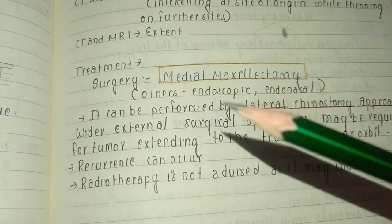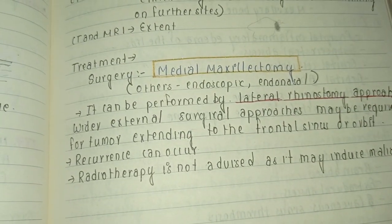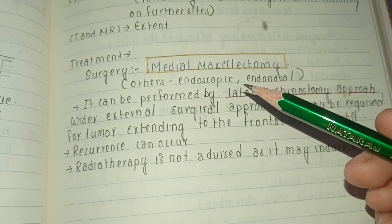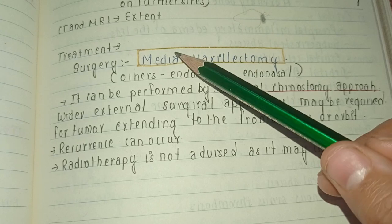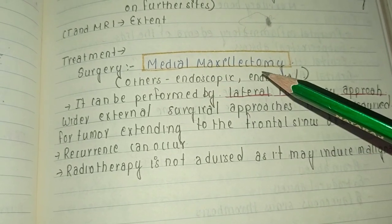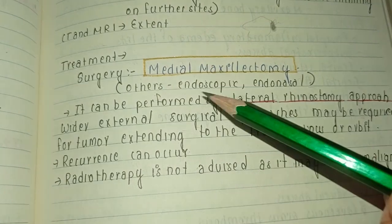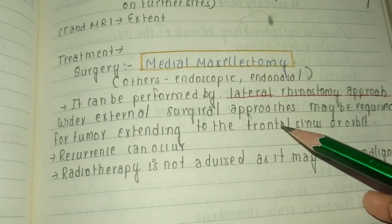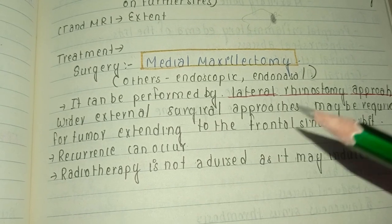The main treatment of inverted papilloma is surgery. Since it is a mass, it cannot be treated by medical approaches alone, so surgery is the best option. The procedure performed is medial maxillectomy. We can also use an endoscopic or endonasal approach, but the treatment of choice is medial maxillectomy, performed via the lateral rhinotomy approach.